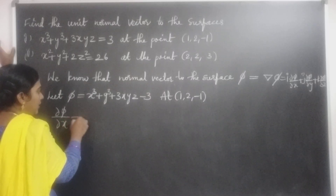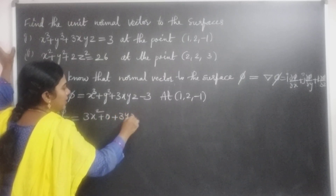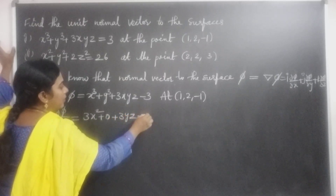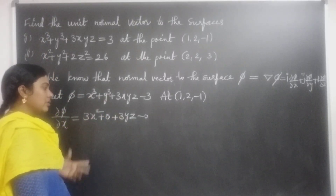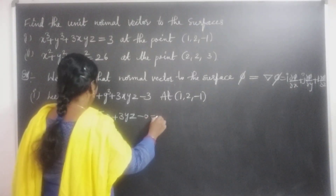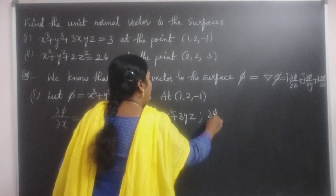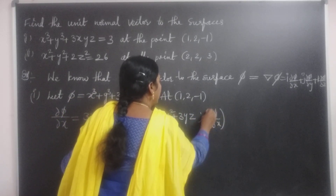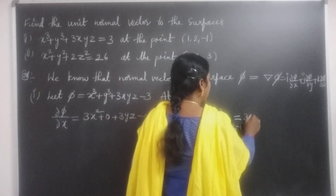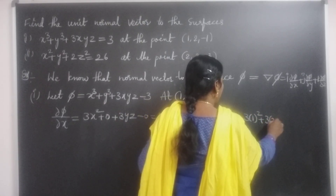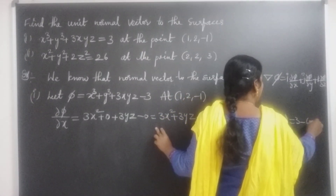∂φ/∂x = 3x² + 0 + 3yz − 0 = 3x² + 3yz, because y³ and the constant 3 are treated as constants so their derivatives are 0. At the point (1, 2, −1): ∂φ/∂x = 3(1)² + 3(2)(−1) = 3 − 6 = −3.